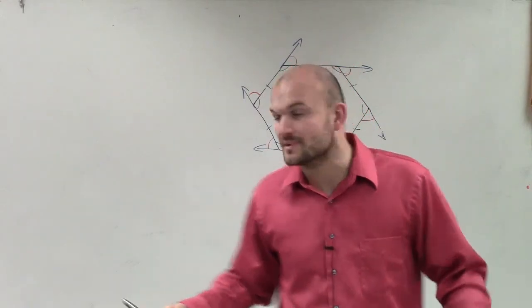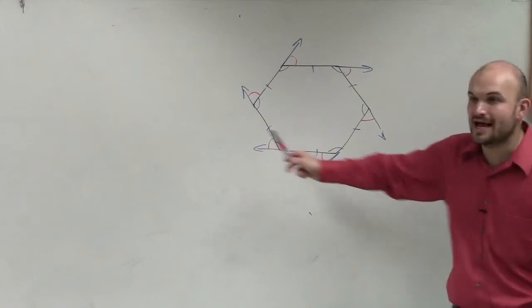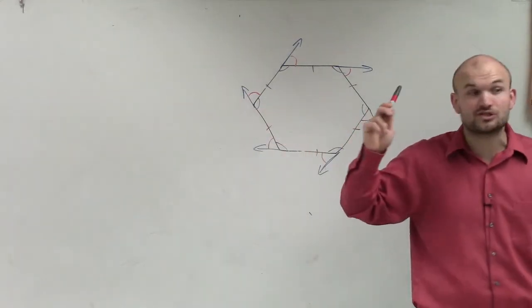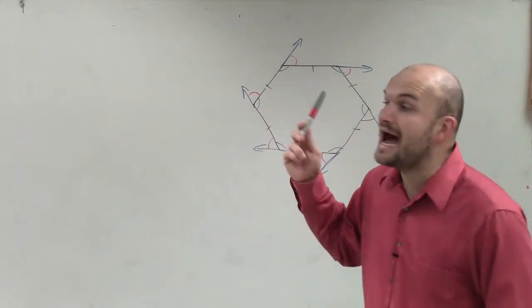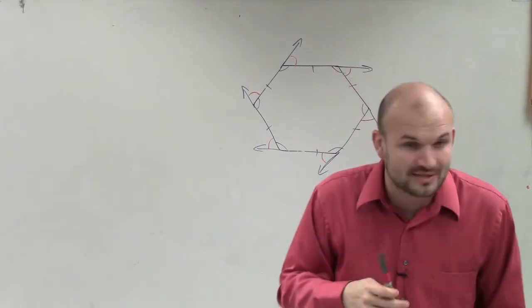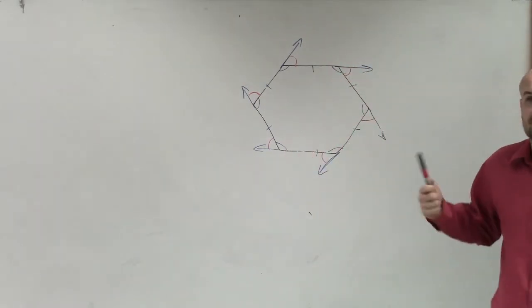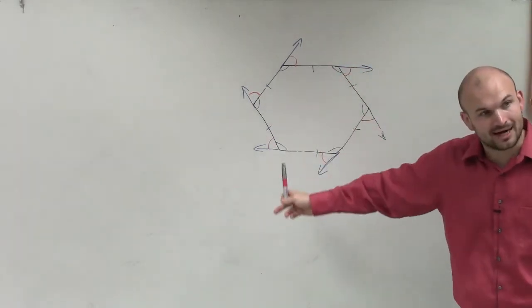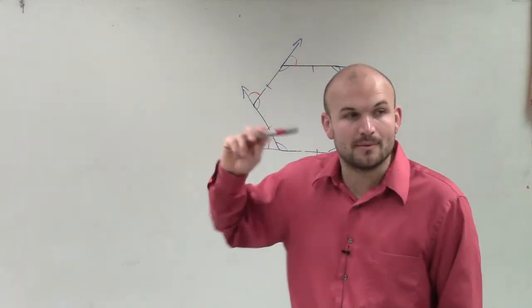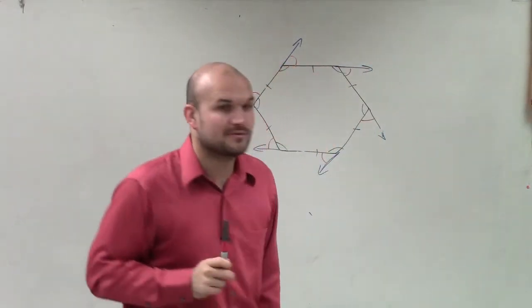So all angles add up to 360. All of these red exterior angles add up to 360. And I don't care if it's a triangle, I don't care if it's an octagon or a dodecagon. All the exterior angles for any polygon that's going to be a regular polygon is going to add up to 360.